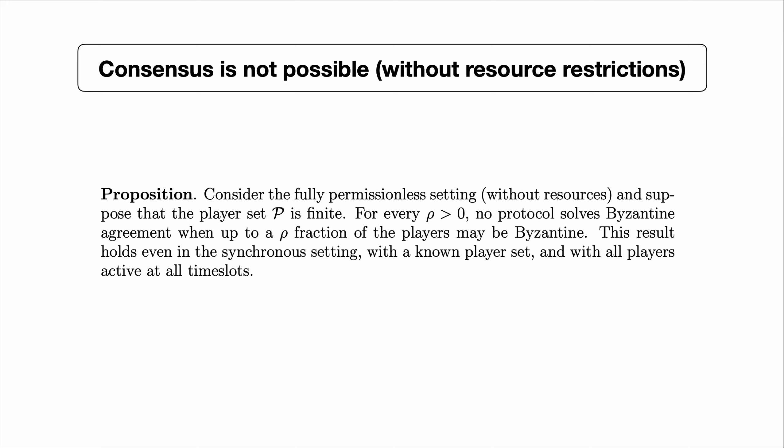Here is the proposition. Consider the fully permissionless setting without resource restrictions yet, and suppose that the player set is finite. For every rho > 0, no protocol solves Byzantine agreement when up to a rho fraction of players may be Byzantine. This result holds even in the synchronous setting with a known player set and with all players active at all time slots — so it's really the possibility of sybils that's driving the impossibility result. In the next video we're going to sketch a proof of this proposition.